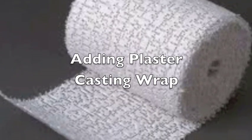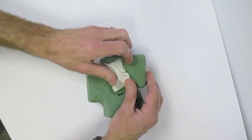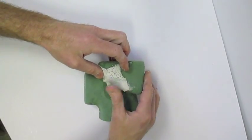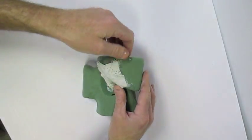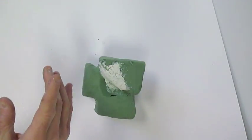Adding plaster casting wrap. Cut your plaster casting wrap into small squares and rectangle shapes. Dip your plaster casting wrap strips into a tray of water.